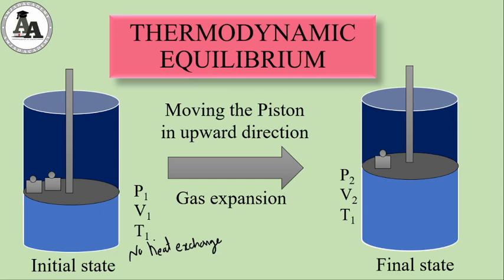In the initial state, heat exchange is absent, pressure, volume, temperature are specified, and piston is motionless — so this system is in a thermodynamic equilibrium. Now when we move the piston upward by letting one weight down, the piston moves up. When this piston gets stopped at a particular step, we can define the pressure, volume, and temperature of the gas, and here also no heat exchange takes place. So this system is said to be in thermodynamic equilibrium.